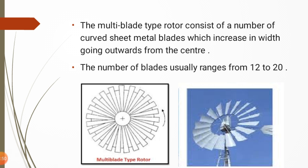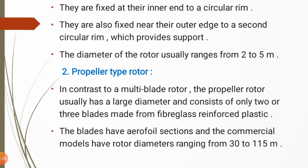The blades are attached to the second circular rim which acts as a support. The diameter of the multi-blade type rotor usually ranges from 2 to 5 meters. Now the second type is the propeller type rotor.